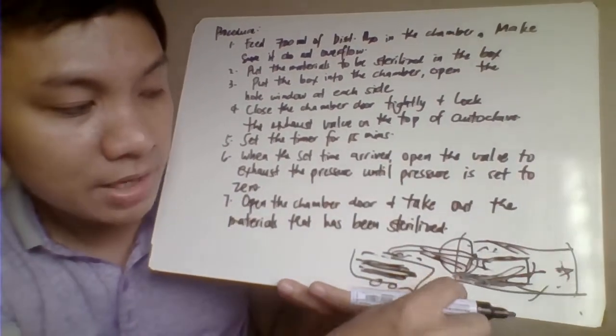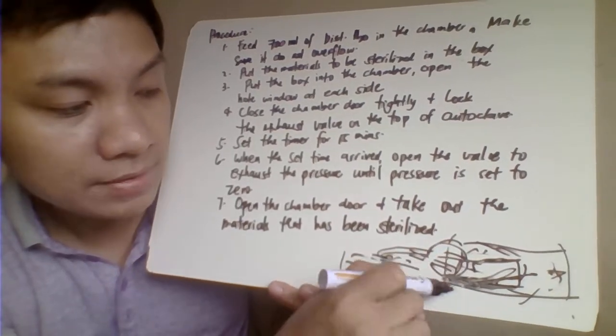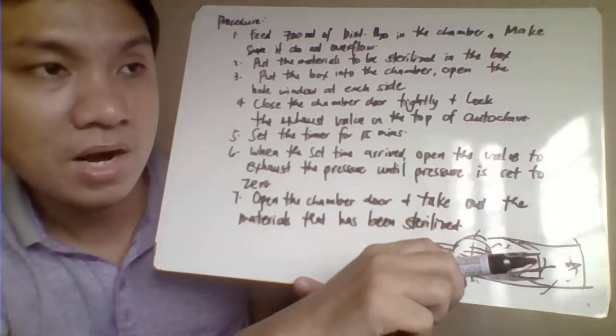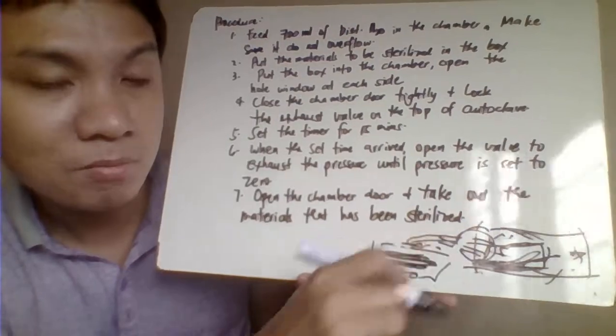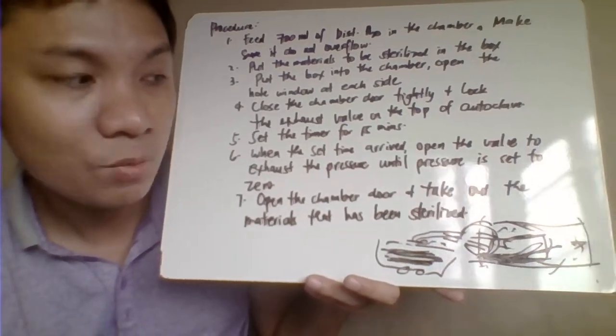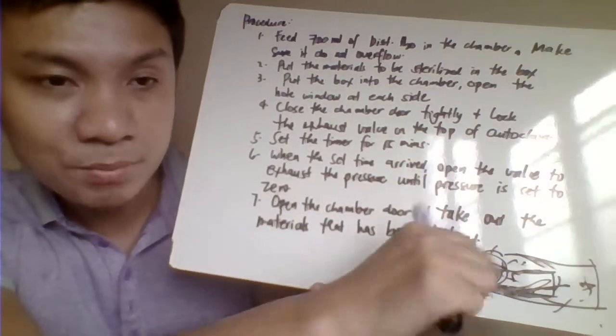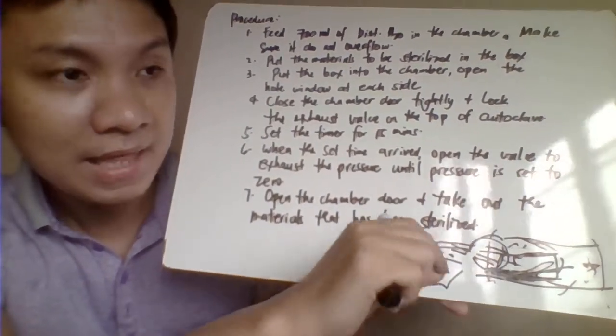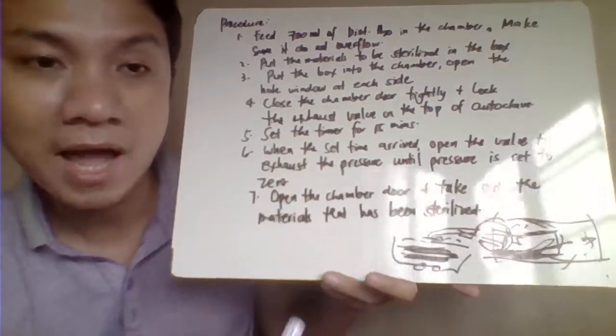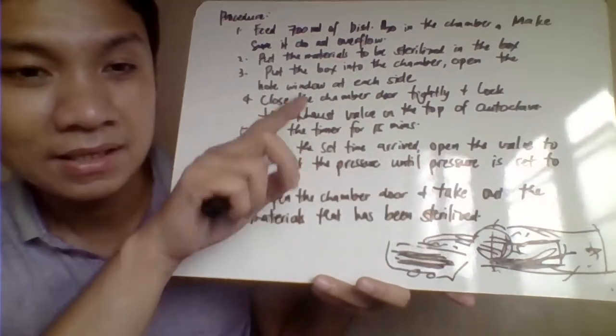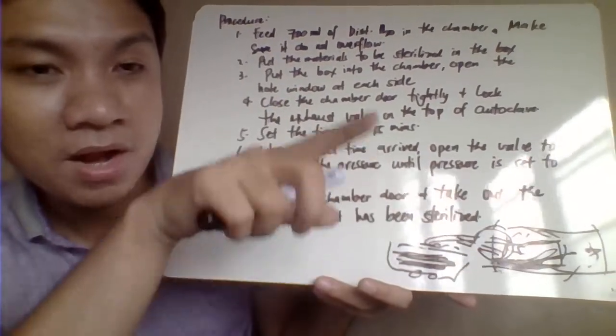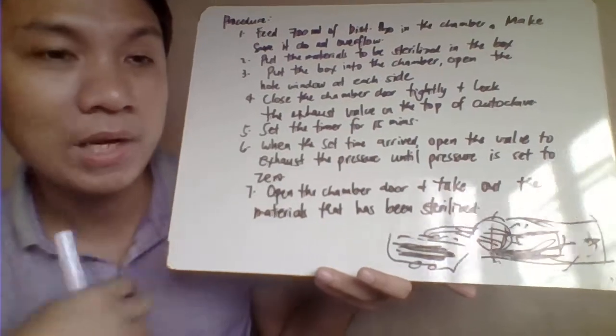After that, try to close and screw tightly using your wing nut compression screws. Then close your pressure relief valve and start the timer. It's automatic—when you start the timer, it also allows the pressure to rise to 121 degrees temperature and 15 pounds psi.